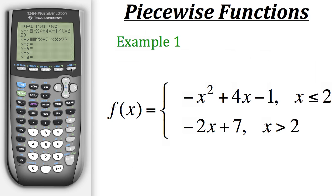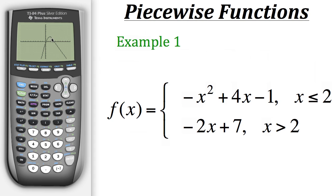Now let's graph to see what that looks like. If you notice, with our first expression from the piecewise function, it draws that part of the parabola until it gets to x equals 2, and then it stops. And then from there the second expression takes over, and is graphed for all parts of x greater than 2. Now if you wanted to look at each part of that piecewise function individually, you could just turn the one off that you don't want to see.